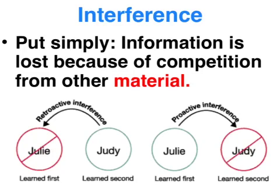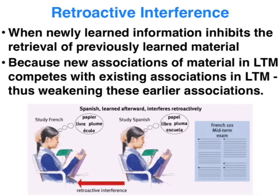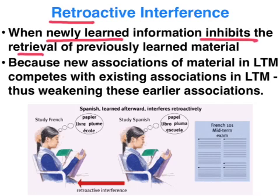Interference is a theory of forgetting in which information is lost because of the competition of other material. In this clip I'm going to focus on proactive and retroactive interference. Retro in this context means backwards. Retroactive interference occurs when newly learned information inhibits the retrieval of previously learned material, because when we learn new information we make new associations with existing material in our long-term memory, which weakens existing associations of similarly learned information and leads to forgetting.